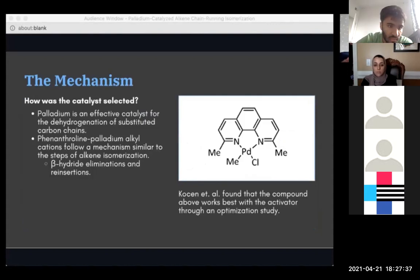How was the catalyst selected? For starters, palladium is an effective catalyst for the dehydrogenation of substituted carbon chains, and it's also a transition metal. As I mentioned before, transition metal catalysts are often used in these types of chain-running isomerization reactions. Paired with the activator, the catalyst is also quite bulky, which helps with regioselectivity, so it'll only react at a specific place on the reactive. To get a little bit more specific, phenanthroline palladium alkyl cations follow a mechanism similar to the steps of alkene isomerization. The mechanism includes a series of beta-hydride eliminations and reinsertions, which, in theory, also occurs during chain migration. From just theory and past research, Kostin and his team were able to deduce that a phenanthroline palladium complex would be the most useful. That makes up everything but the attached chloride and methyl groups. Through an optimization study, the team found that the selected catalyst works best alongside the cyclical activator, which is a variant of sodium tetraphenyl borate, which is a well-known precipitating agent in organic chemistry. The catalyst is also air and moisture stable, which makes running the reaction a lot easier in terms of monitoring conditions and stuff.